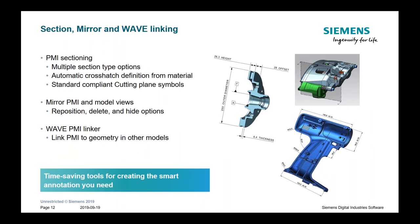We offer a number of workflow-related concepts and functionality within the application. There are multiple different types of section views you can indicate, and there is cross-hatching based on materials. We've tried to simplify the process as much as possible, provide automation, and comply with standards. The standards reference a cutting plane symbol — similar to a 2D section line in a drawing but in the context of a 3D environment. There's also the concept of mirroring PMI and model views — a container for PMI objects for displaying and organizing. And there's a concept called Wavelinker, which allows you to link PMI from one model to another to build relationships and connectivity between your models.